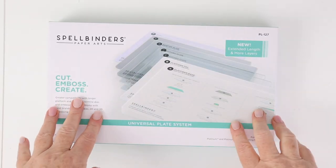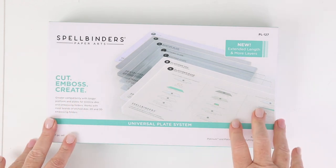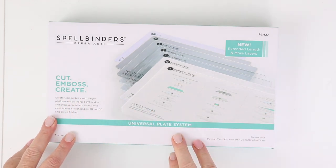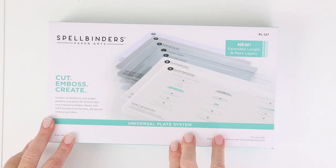So first let's take a look at what comes inside the box when you buy the universal plate system from Spellbinders. Let's take a look at everything that comes in the box. As you can see, you can use these plates to cut, emboss...